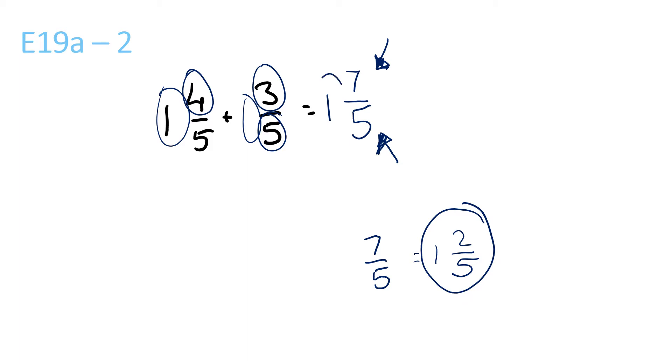You have to plus that with your 1. So what's 1 plus 1? It's 2. So that would equal 2 and 2 over 5.